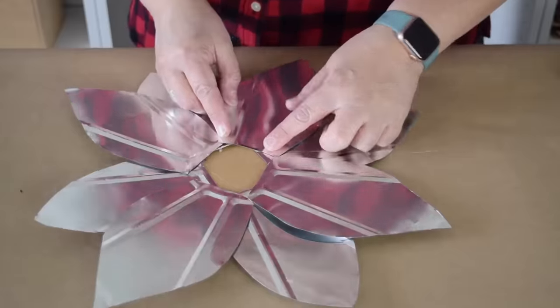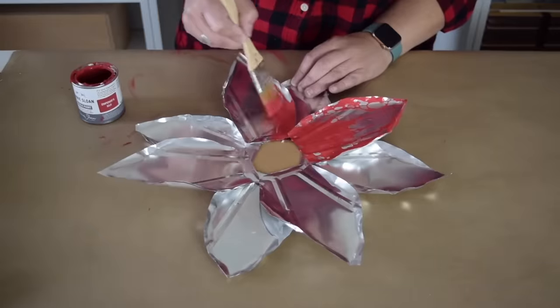Now it's time to add the petals to the cardboard circle. Bend up the edges. So I'm going to paint them all red.